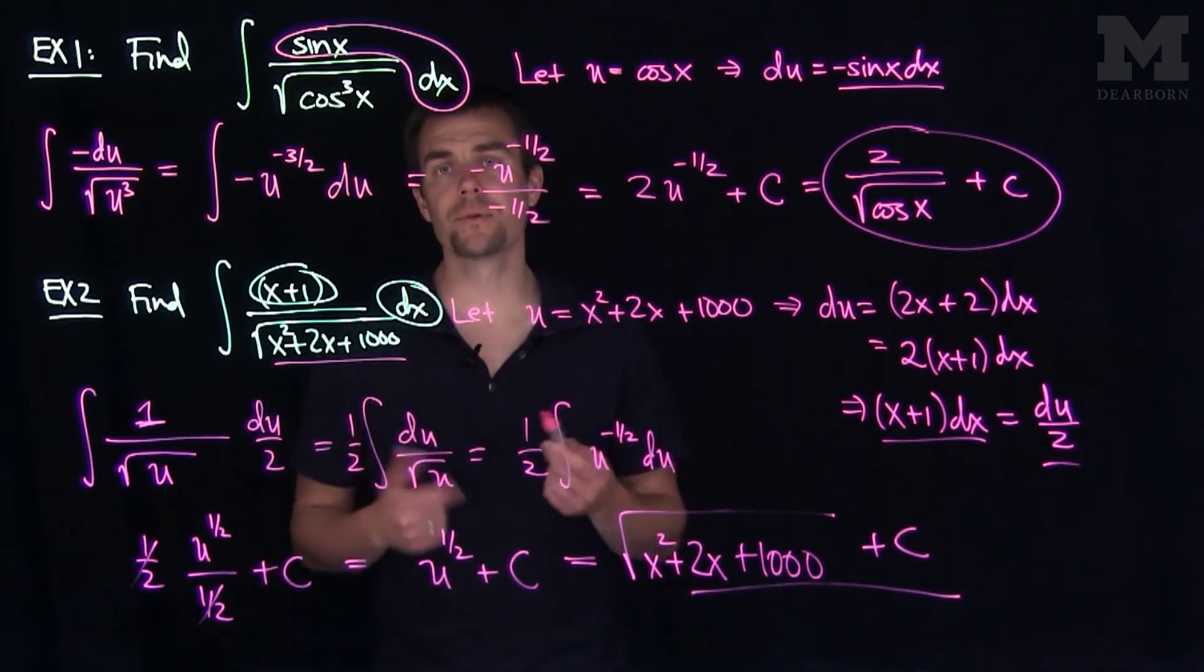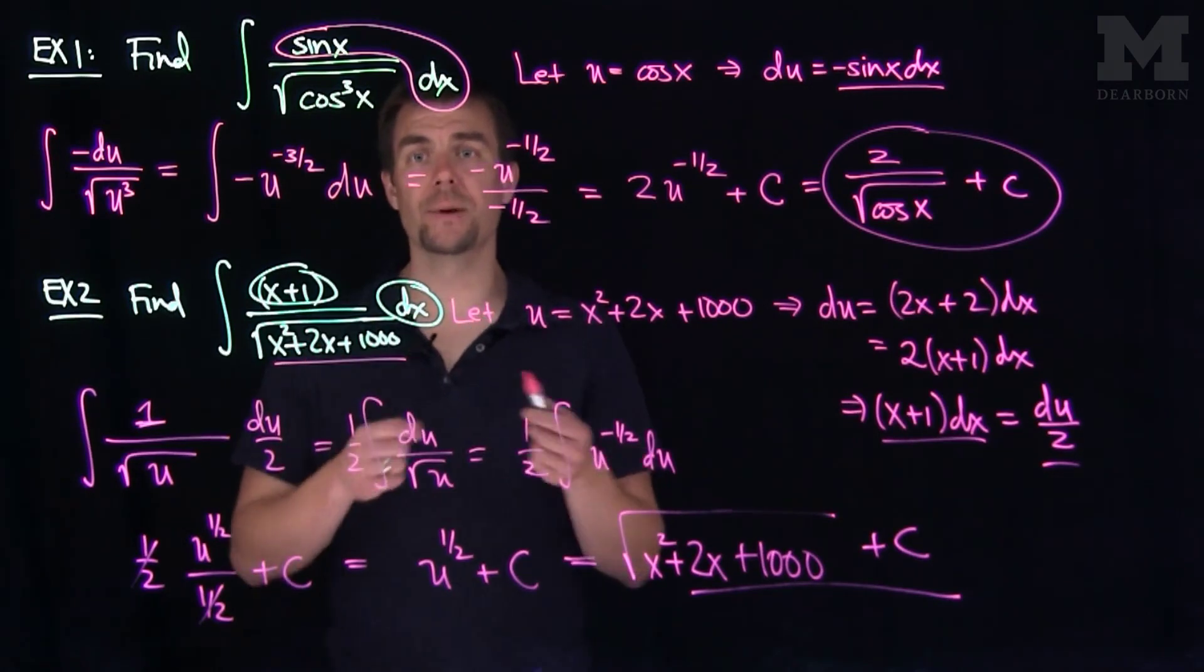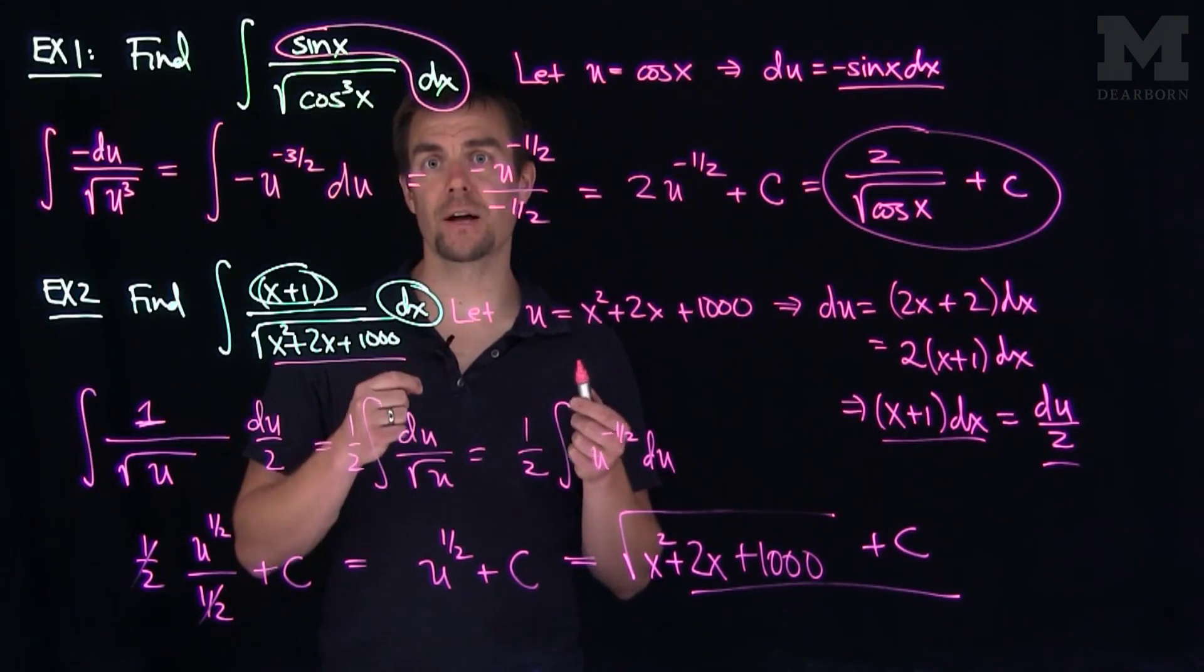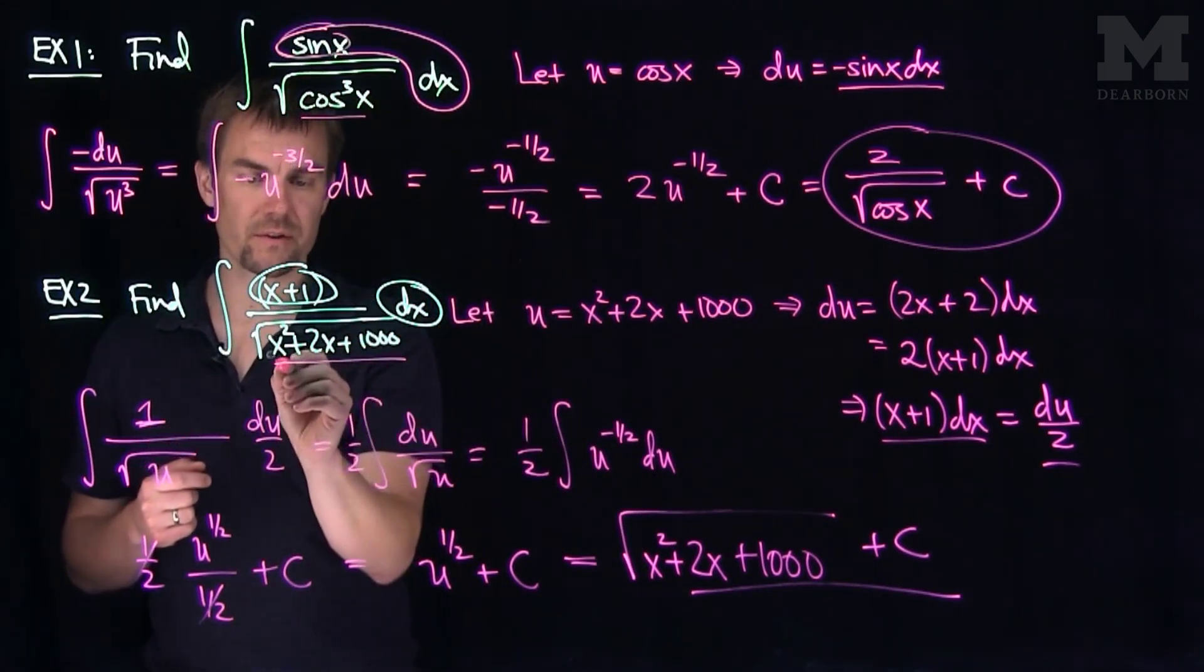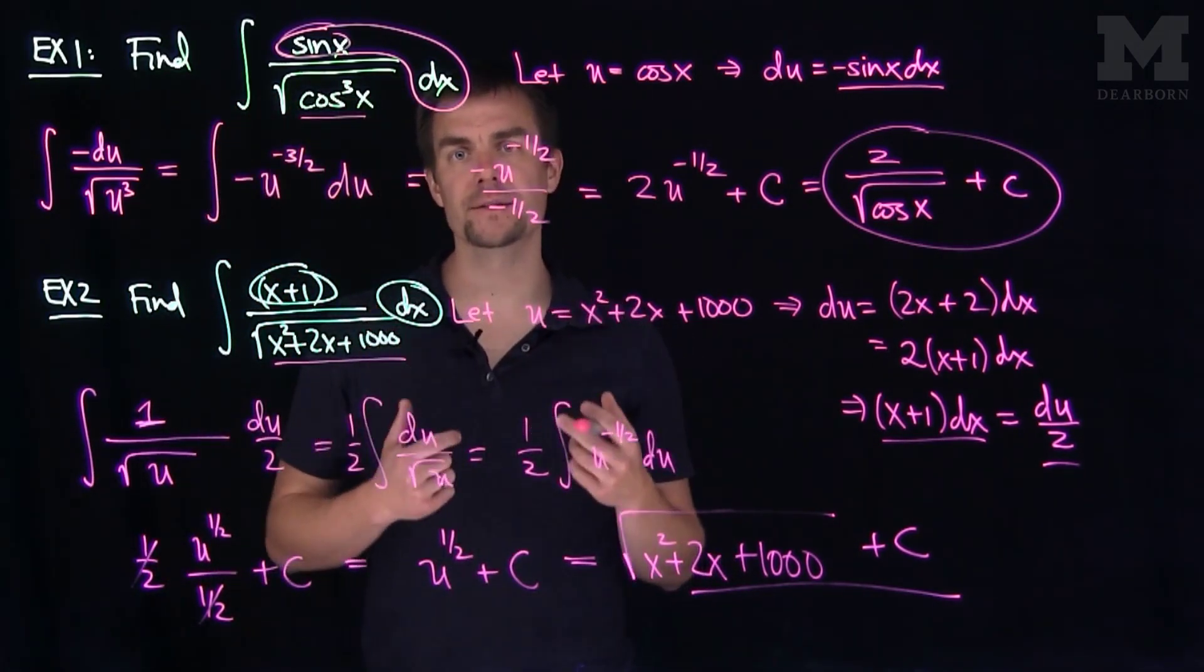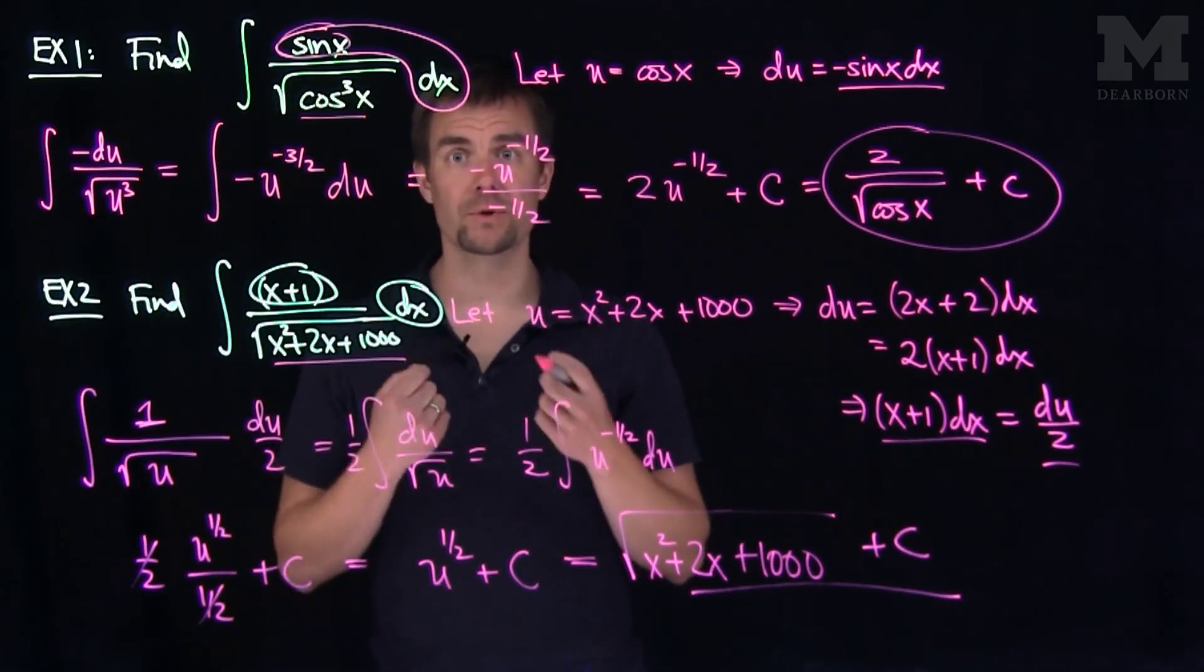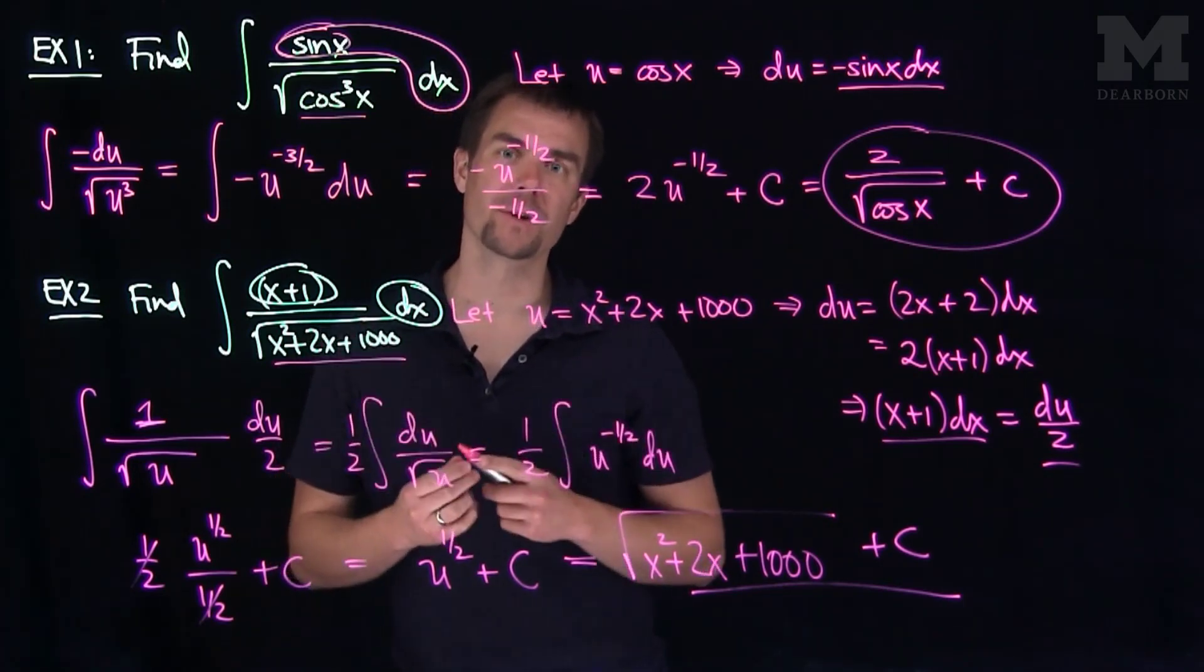As we can see from these examples, u substitutions rely on making observations about seeing derivatives of one function in the same integral as you see the function itself. Over here, we notice that the derivative of cosine was sine. Over here, we notice that the derivative of x squared plus 2x plus 1000 was a multiple of x plus 1. Those observations take time and practice to make clear in other problems, so practice a lot with these u substitutions, do a lot of the book problems, and that will help you find out how to make u substitutions quickly and easily. Thank you very much.